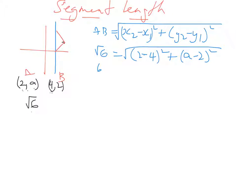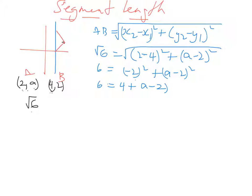We square both sides and we end up with 6 equals — simplifying, 2 minus 4 gives us negative 2, negative 2 squared plus (A minus 2) all squared. Squaring negative 2 makes it 4, so we've got 6 equals 4 plus (A minus 2) squared. Bringing the 4 over to the other side: 6 minus 4 becomes 2, so we've got 2 equals (A minus 2) all squared.